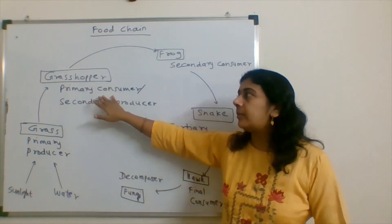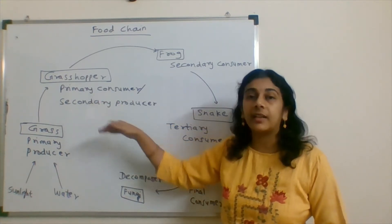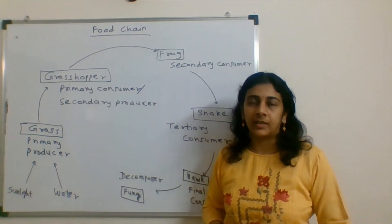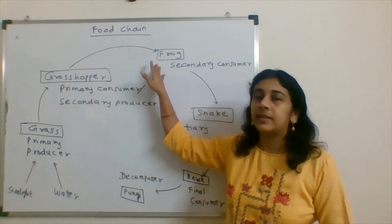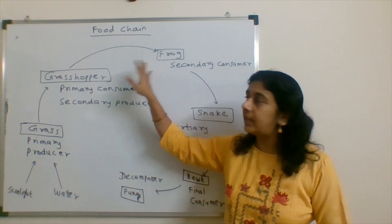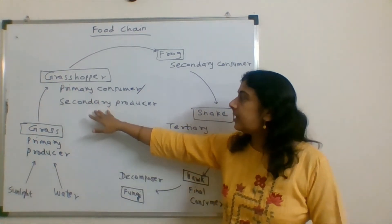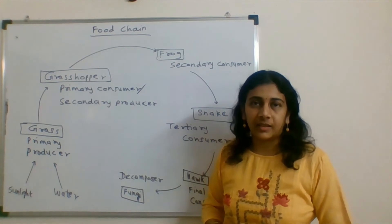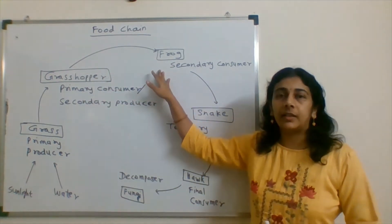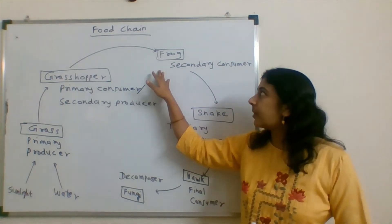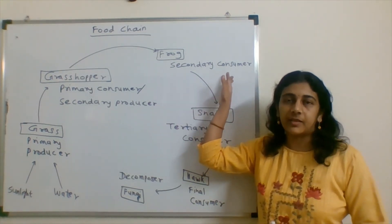Now grasshopper is going to be a prey for its predator. Frog will be a prey for its predator. This frog, we call it as a secondary consumer.